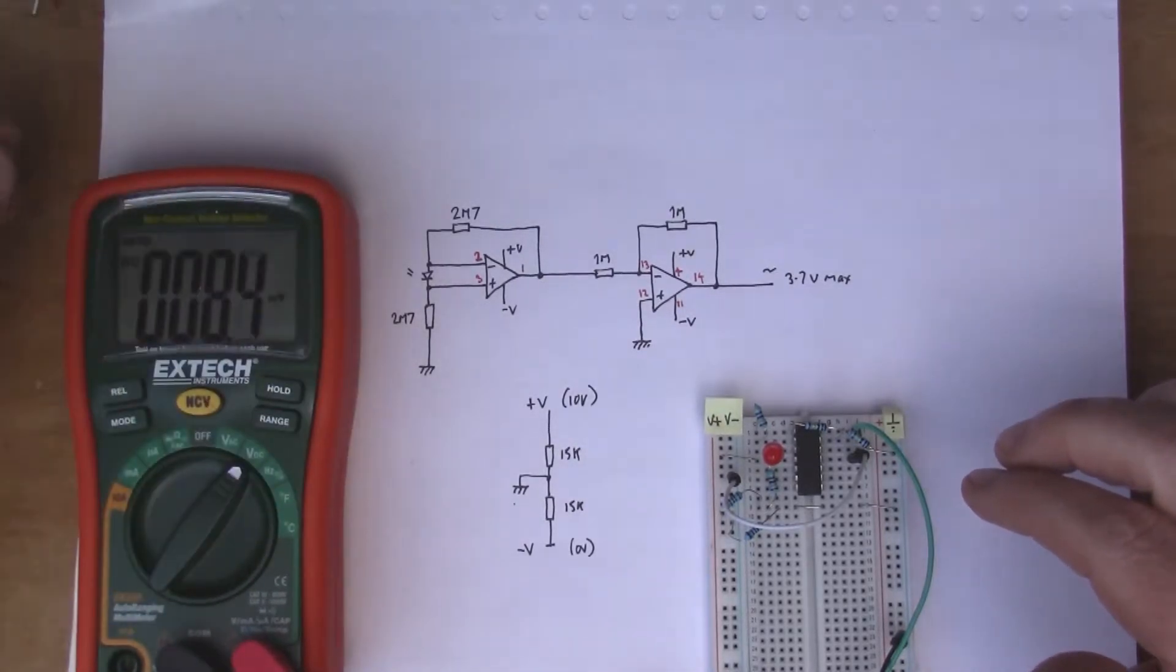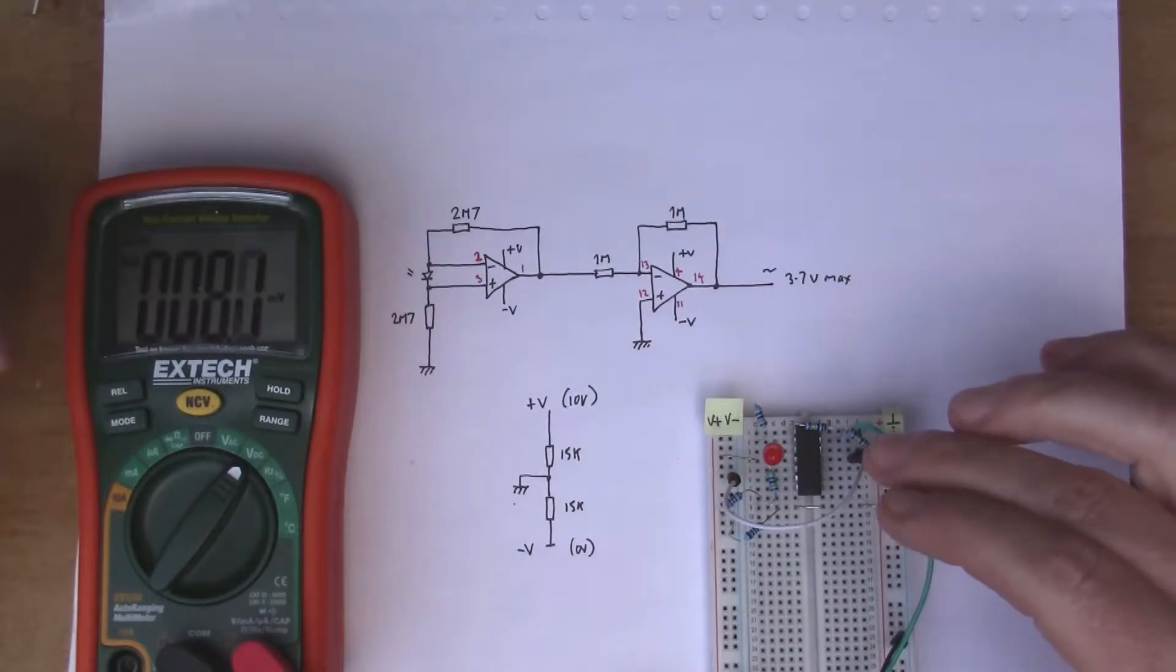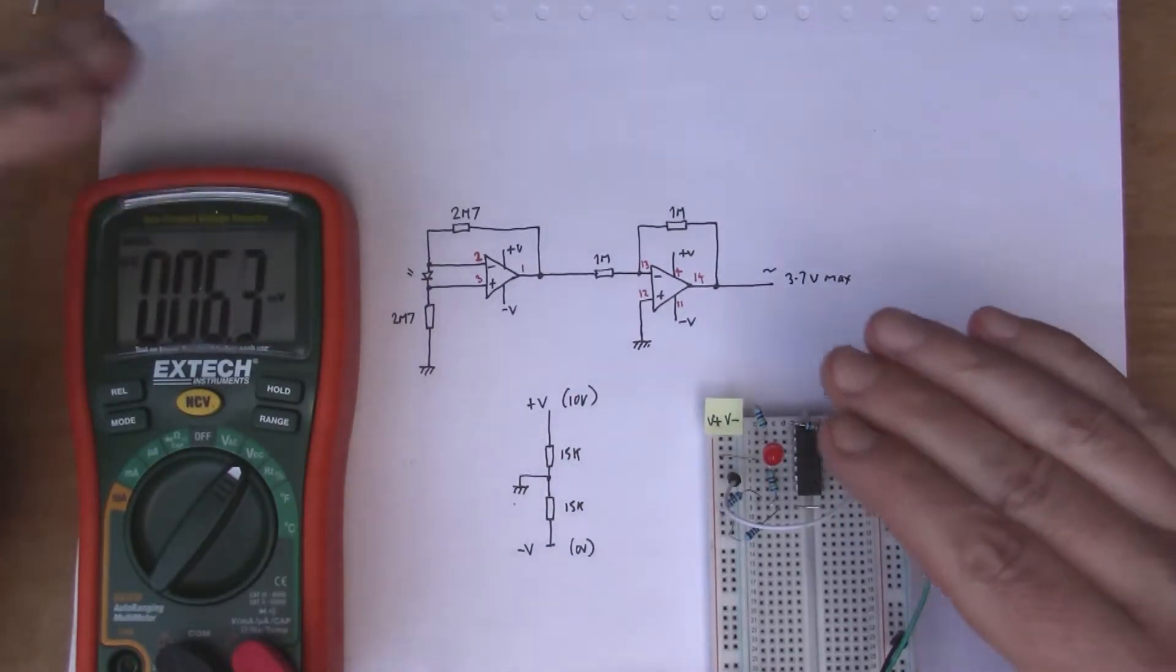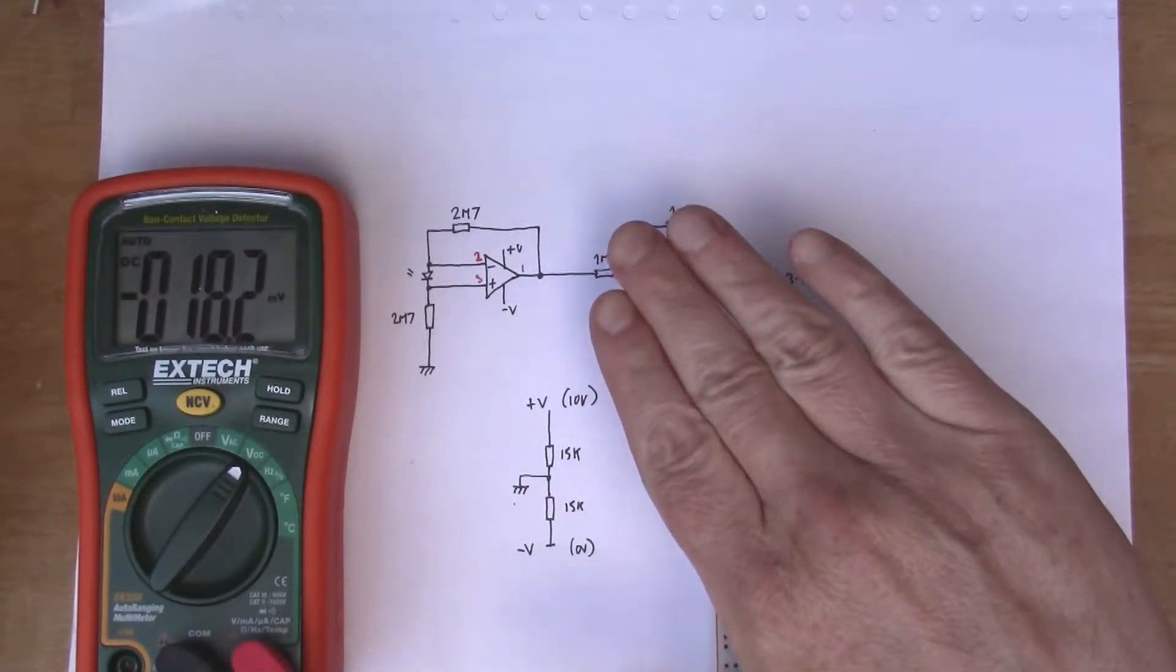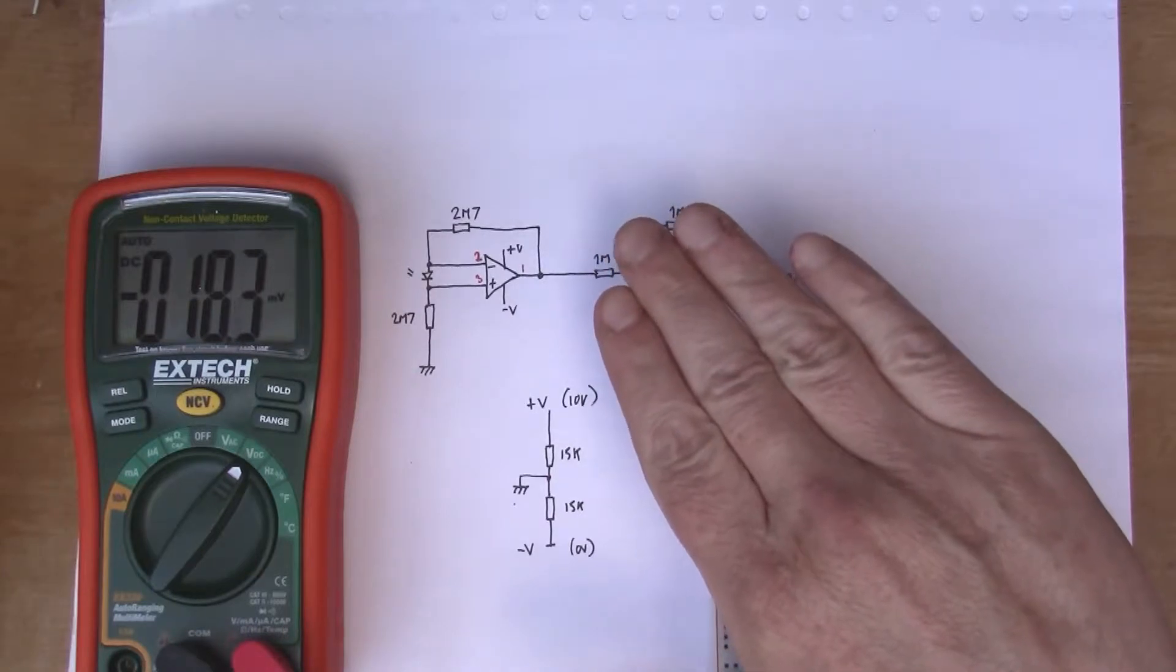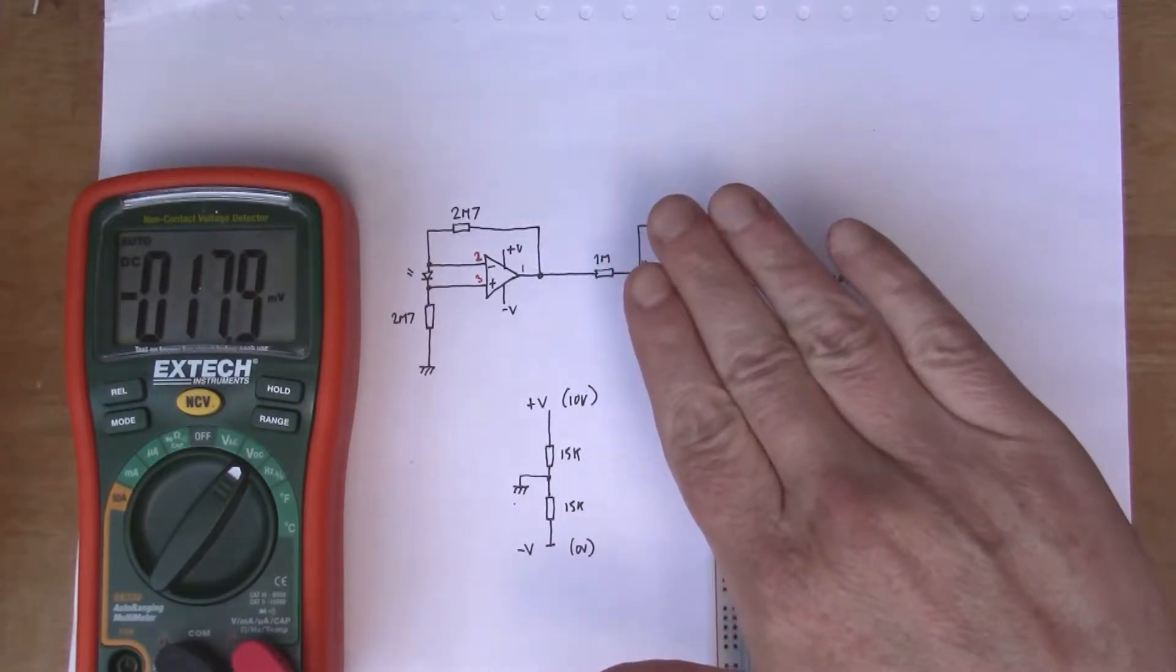If I give you a quick demo, at the moment this is reading a few millivolts, somewhere around zero with the ambient light falling on it. If I cover up the LED you can see that it goes slightly negative, so the voltage value is going down.